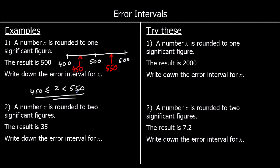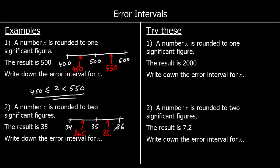The second example has been rounded to two significant figures and we've got 35. To two significant figures, it must have been between the two halfway points: 34.5 and 35.5. We're going to say it could have equaled 34.5 but it cannot equal 35.5.